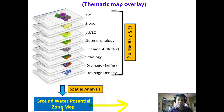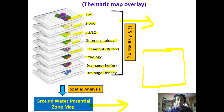For example, to generate a groundwater potential zone map, we consider different thematic layers such as soil type, slope, land use/land cover, morphology, lineament status, lithology (rock type), drainage, and drainage density — all of which contribute to groundwater potential. Once these thematic maps are overlaid on each other, we get an output map called the groundwater potential zone map.